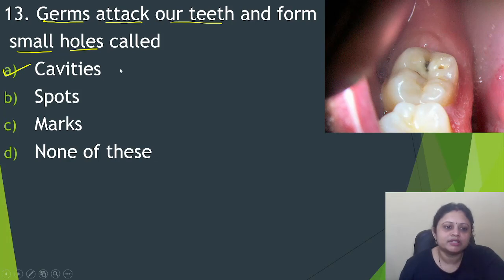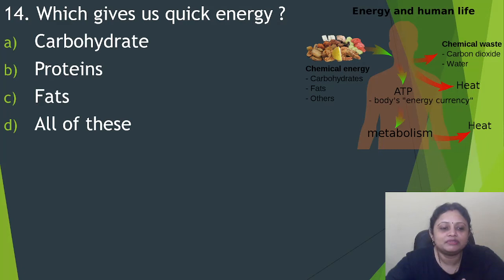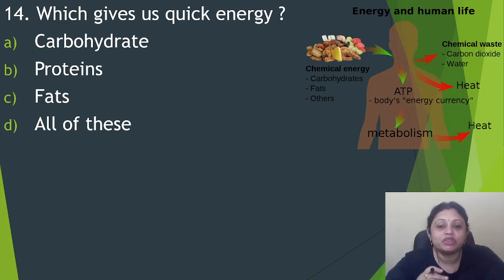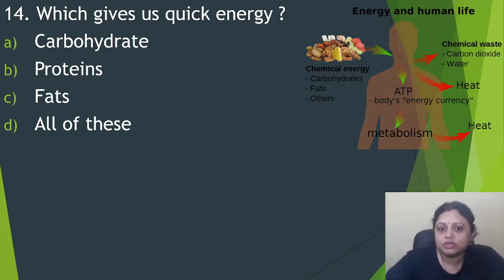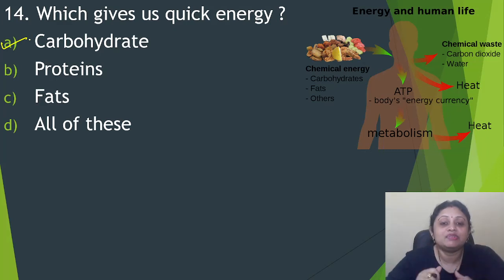Next question: which gives us quick energy? Option A, carbohydrates. B, proteins. C, fats. D, all of these. Do you have any idea which type of food nutrient gives us quick energy? If you know the answer, write in the comment box. The answer is option A, carbohydrates — they give us quick energy.